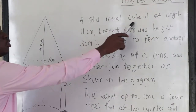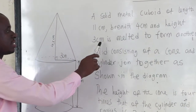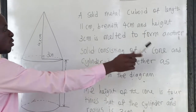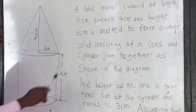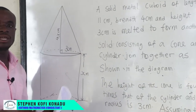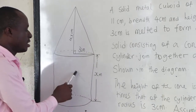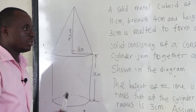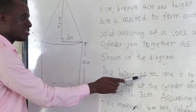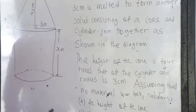A solid metal cuboid of length 11 centimeters, breadth 4 centimeters, and height 3 centimeters is melted to form another solid consisting of a cone and a cylinder joined together as shown in the diagram. The height of the cone is four times that of the cylinder.